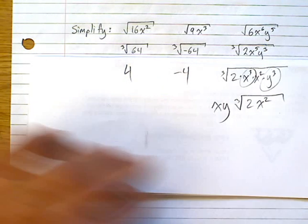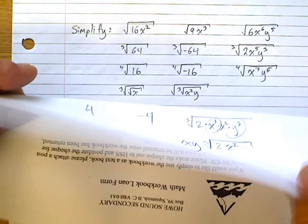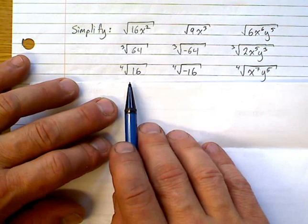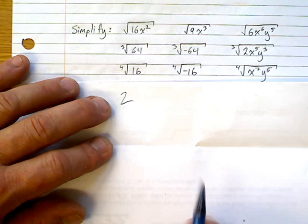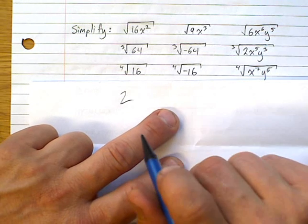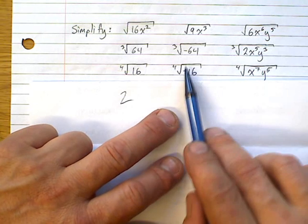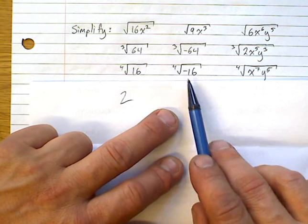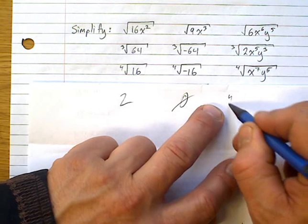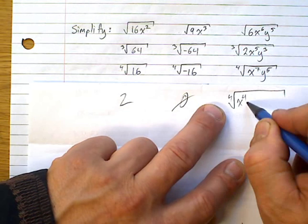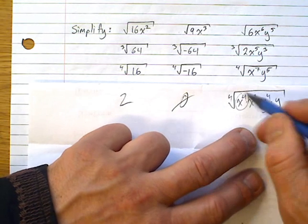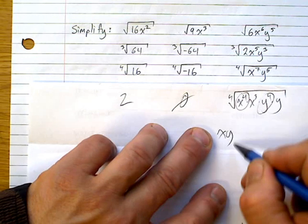For fourth roots: ⁴√16 = 2, since 2⁴ = 16. But ⁴√(−16) has no solution because even roots of negative numbers don't work. For ⁴√(x⁷y⁵): x⁷ = x⁴ · x³, so x comes out with x³ remaining; y⁵ = y⁴ · y, so y comes out with y remaining. Answer: xy · ⁴√(x³y).